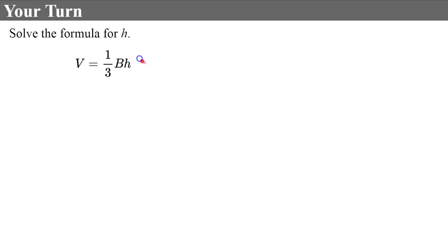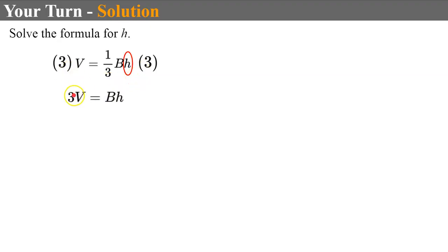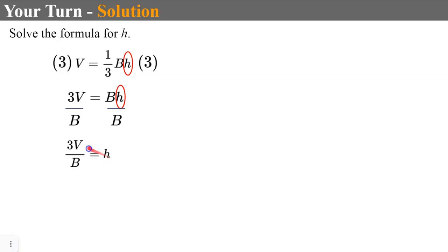Welcome back. I'm solving for H in the volume of a pyramid formula. The first thing I do is clear the fraction by multiplying both sides by the reciprocal of ⅓, which is 3, giving me 3V = Bh — the area of the base times the height. ⅓ times 3 is 1 because they're reciprocals. Still solving for H, I divide both sides by the uppercase B, which represents the area of the base, giving me 3V ÷ B. There's nothing more I can simplify, so H = 3V ÷ B.